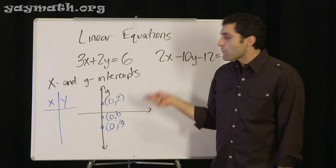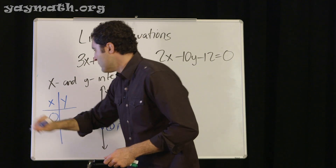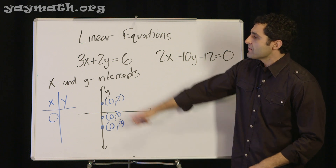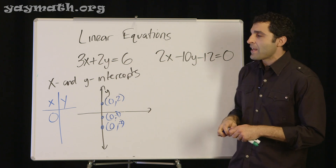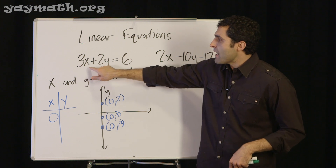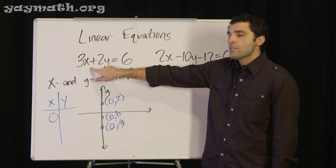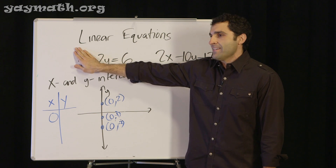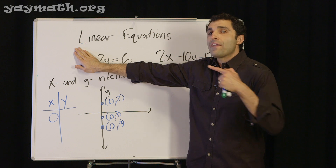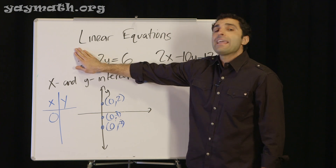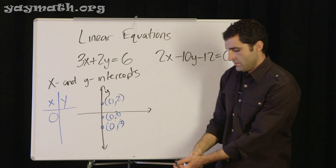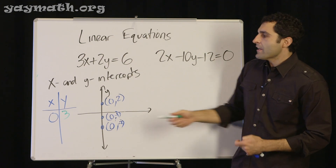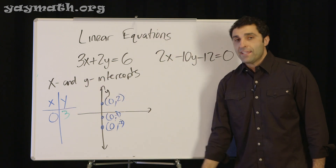On the y-intercept, x has to be zero. So if x is zero, what is y? Let's plug x = 0 into our equation. Three times zero — zero is gone. The new equation is 2y equals 6, so y equals 3. The y-intercept is the point (0, 3). The second you see x = 0, you know you're finding the y-intercept.